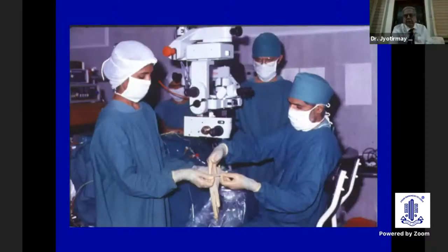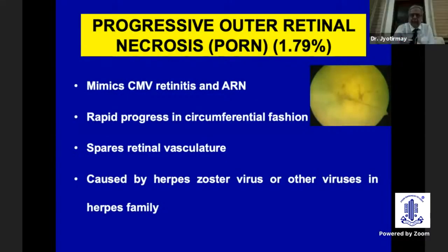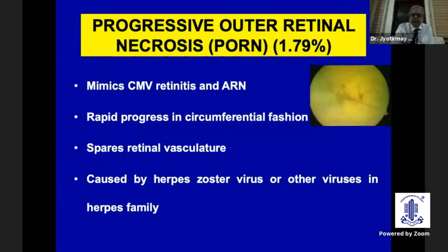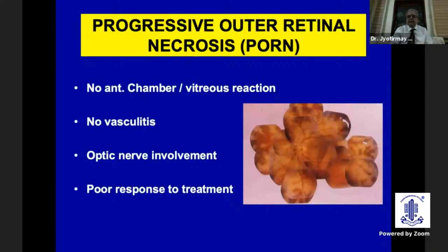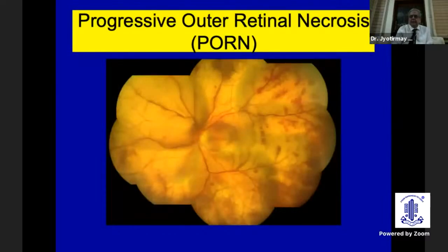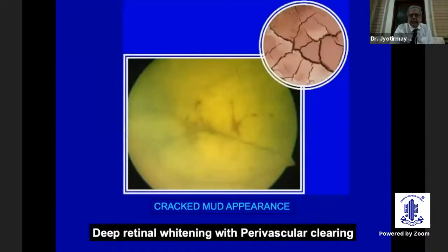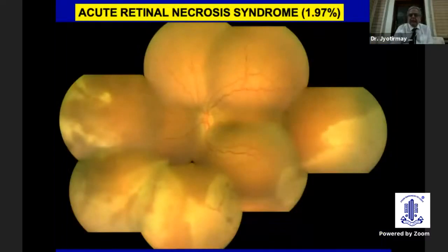Surgeons need to take precautions such as double gloving and aseptic measures to avoid needle-stick injury. Another rare but devastating disease is progressive outer retinal necrosis (PORN) — it mimics CMV retinitis or acute retinal necrosis, rapidly progresses from the center to the periphery, spares the retinal vasculature, and is caused by varicella-herpes zoster virus or related herpesviruses. Characteristic features include no anterior chamber or vitreous reaction, no vasculitis, optic nerve involvement, and poor response to treatment. The classic picture shows full-thickness retinal necrosis from center to periphery with perivascular sparing, giving a 'cracked mud' appearance with deep retinal whitening and perivascular clearing.